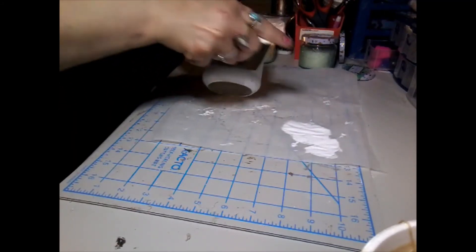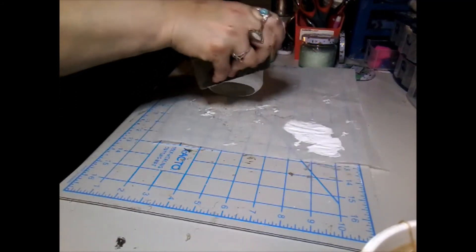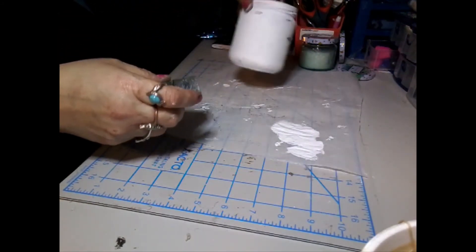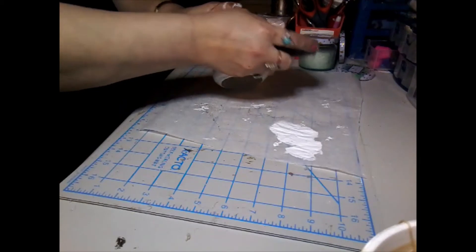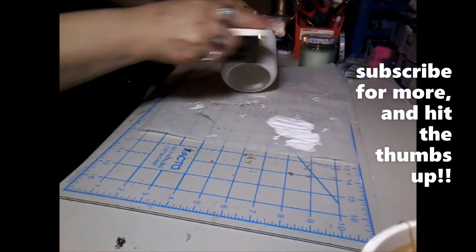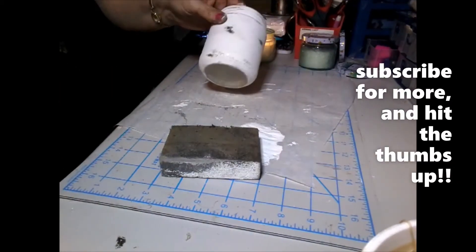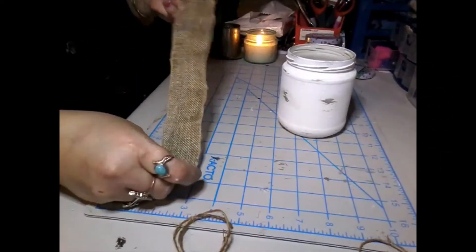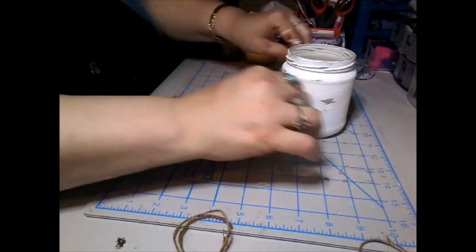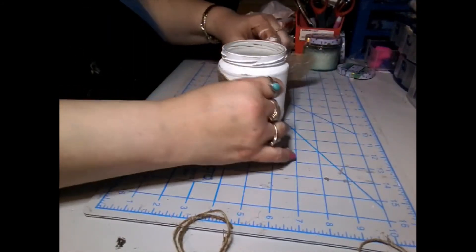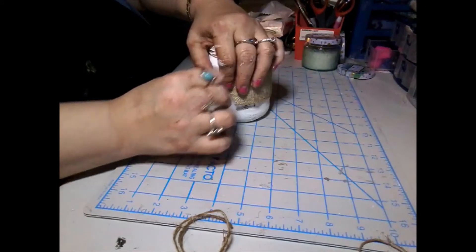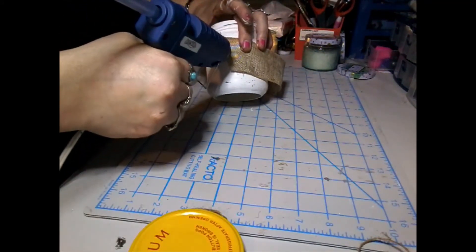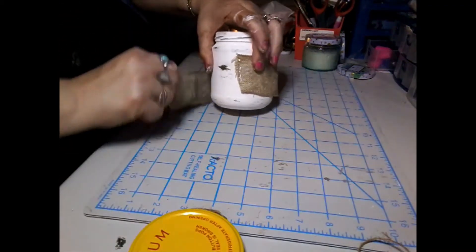Just do it wherever you think it needs it. It's really up to you, whatever you like. Next I'm going to take this burlap ribbon. I picked it up from the Dollar Tree and we're going to put it around the middle. At the back, we're going to hot glue it. We'll fold it over to give it a nice neat edge.